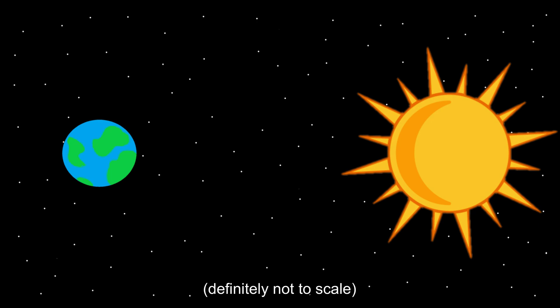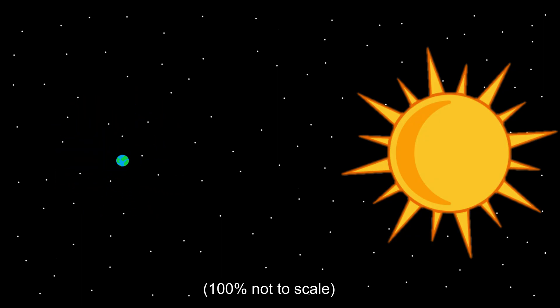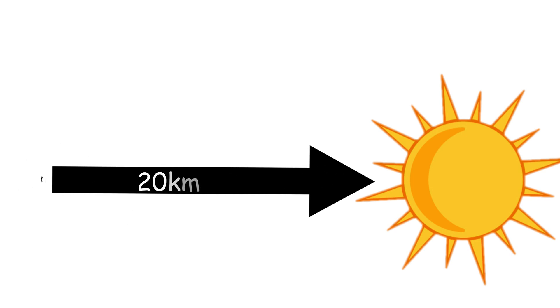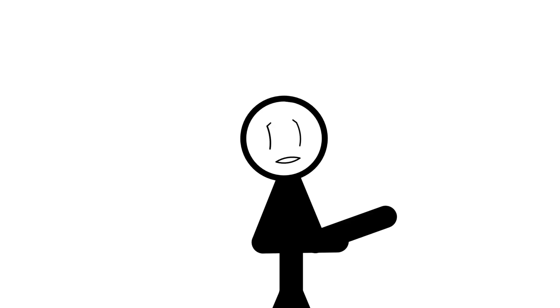But now consider the earth and the sun. Now things get a little bit more interesting. Again, scaled down so that the earth is about 5 foot 9, the sun would now almost be 200 meters tall. A literal giant compared to us. Then the distance between us and the sun, known as one astronomical unit, is now 20 kilometers. Now that's not so easy to visualize. And this, my friends, is just the tip of the iceberg.